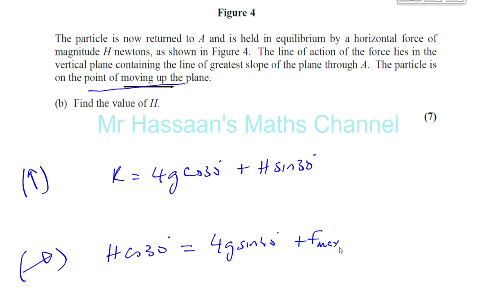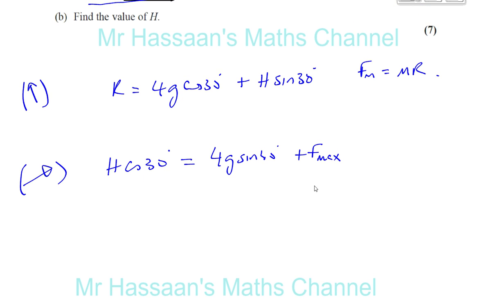And this F is F max, because it's on the point of moving. So any more increase, it will move. So it's reached this limiting value. And we know that F max is equal to mu R. Now the F max now won't be the same as in part A, because R is different now. R is different now. So what we can do here is I can make an equation by replacing this with mu R.